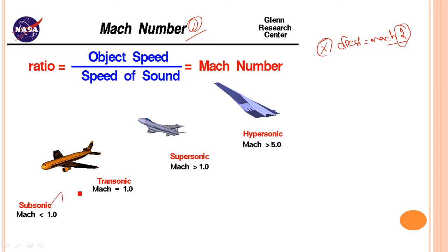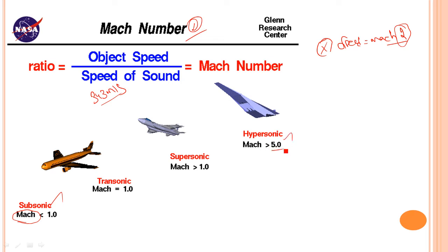There are three speed categories. Type one is subsonic — where the missile speed is less than the speed of sound, which is 343 meters per second, meaning Mach below 1. Supersonic is Mach 1 and above. Hypersonic is very high speed — above Mach 5.